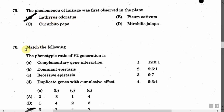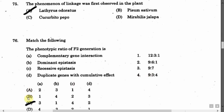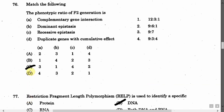The next question is: Match the following — phenotypic ratio of F2 generation. A: Complementary gene interaction. B: Dominant epistasis. C: Recessive epistasis. D: Duplicate genes with cumulative effect. Right side: 1. 12:3:1, 2. 9:6:1, 3. 9:3, 4. 9:3:4. The correct answer is Option C.